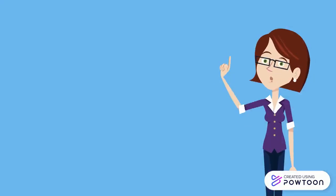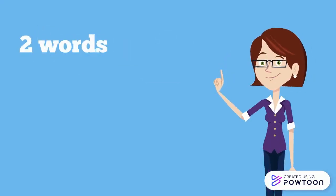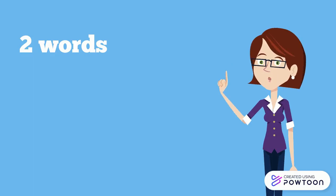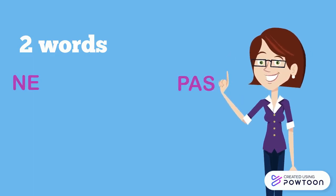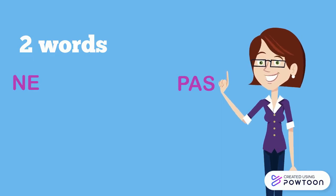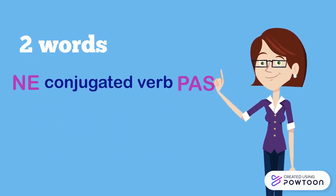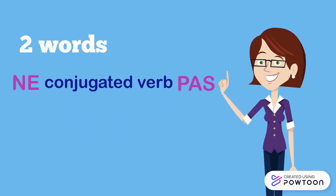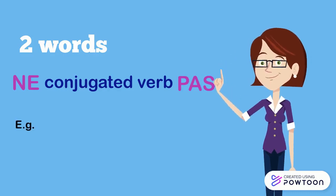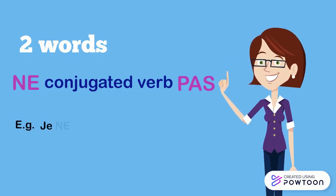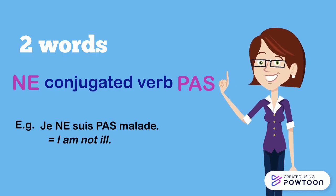In French, we use two words to express the negation: ne and pas. These words are going to stand on each side of the conjugated verb. Ne stands before the verb and pas stands after the verb. For instance, je ne suis pas malade — I am not ill.